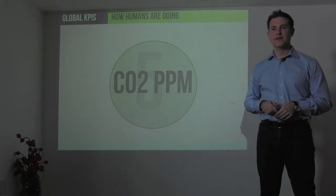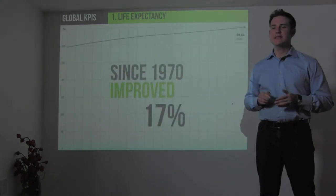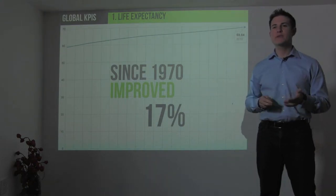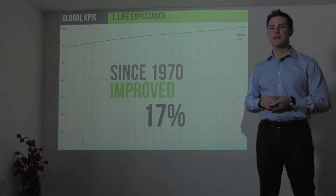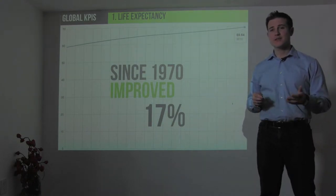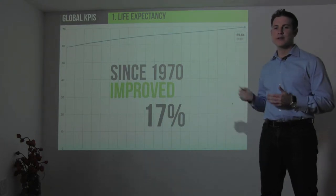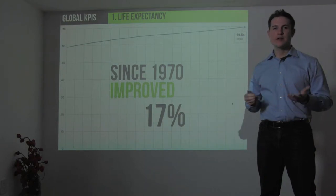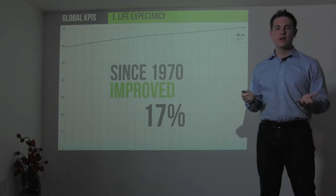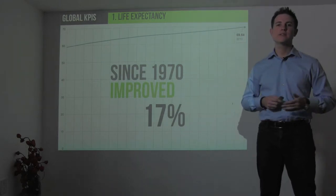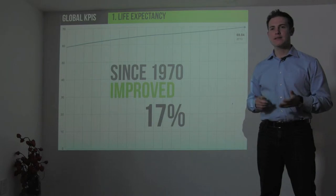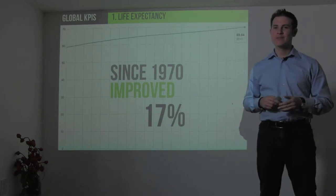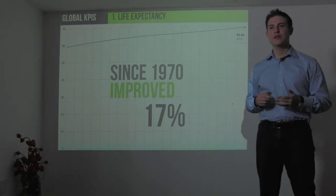Let's look first at life expectancy. Since 1970, over the last 42 years, life expectancy has improved about 17% — from about 59 to over 69, getting close to 70. In the United States, our life expectancy is closer to 77, so this is a worldwide view. On average, someone born today in 2012 can expect to live about 70 years, regardless of where they are in the world. The fact that this is improving shows that there are many advances in healthcare, nutrition, and education that are enabling us to simply live longer lives.